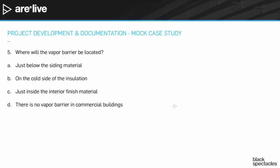Well, there certainly are vapor barriers in commercial buildings — it depends on the building type. You wouldn't necessarily call it a vapor barrier if you have a completely glass curtain wall type system, since the curtain wall itself will act as a vapor barrier. But any other kind of wall assembly is likely to have a vapor barrier.